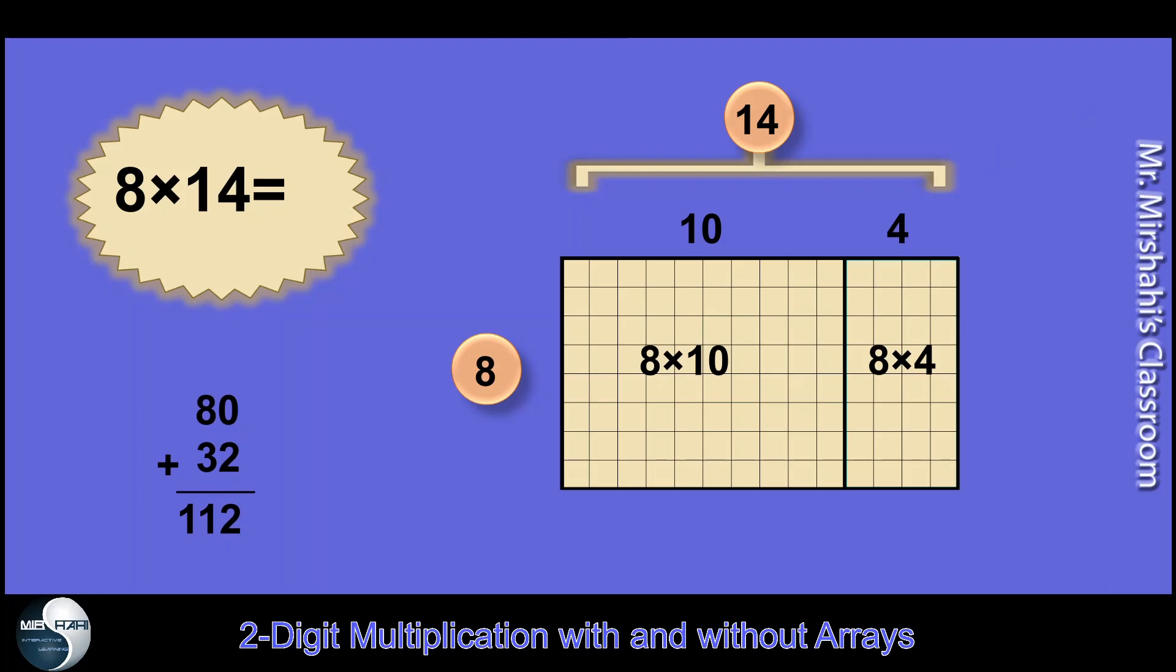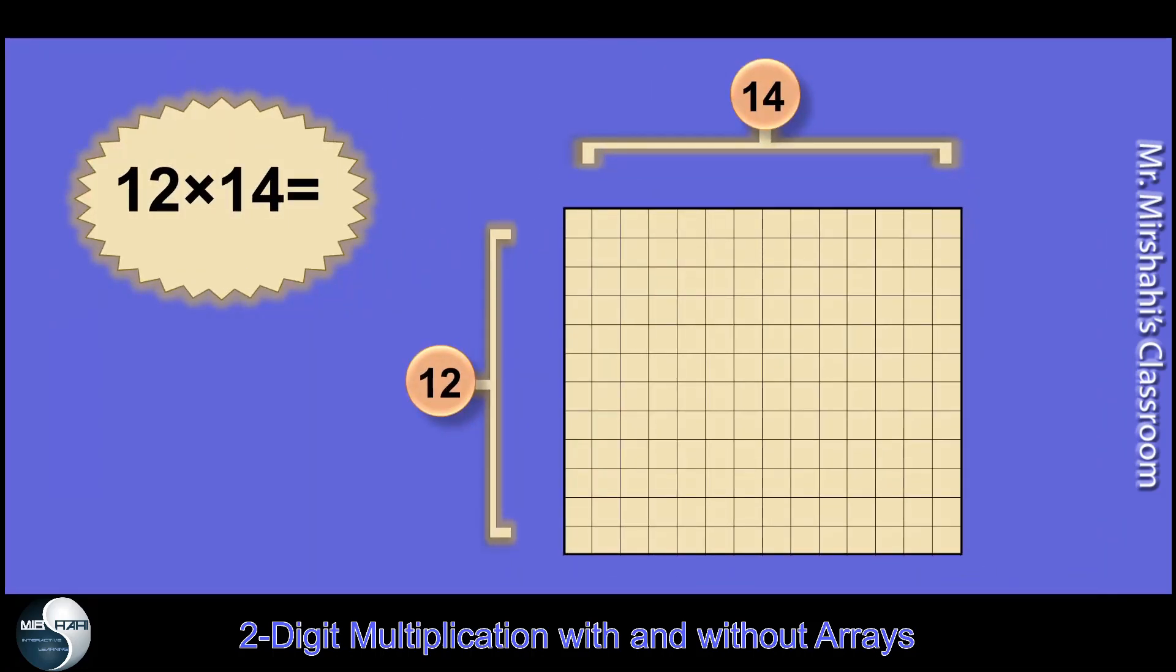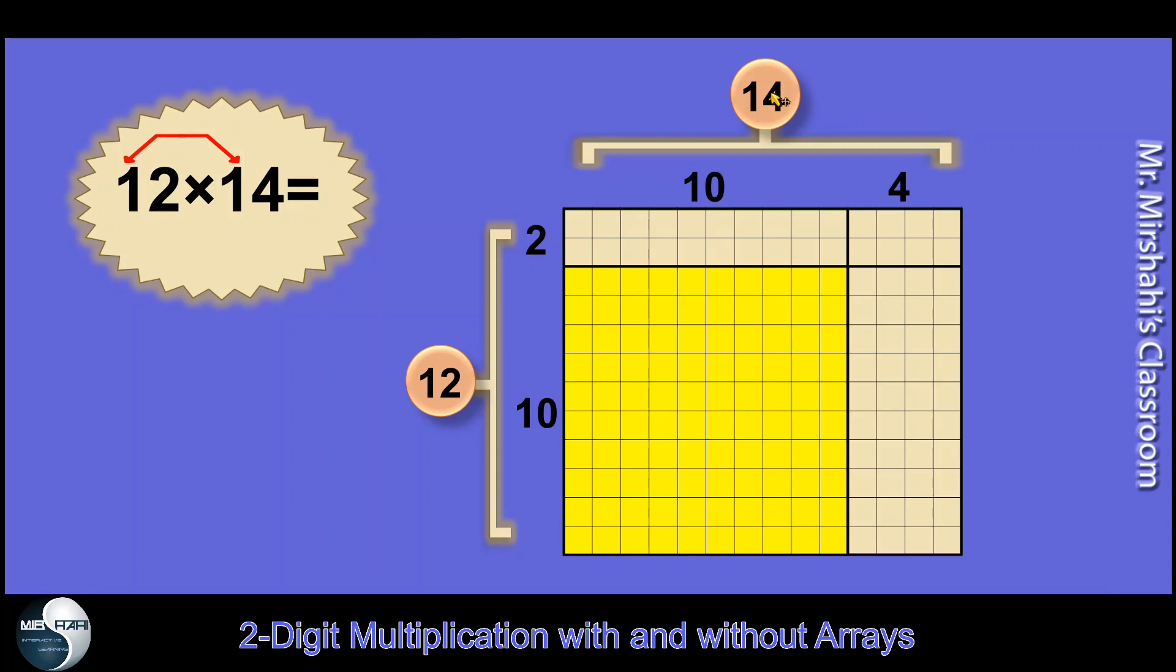Let's move on to our next example. A little bit more difficult. Both of them are two digit numbers, small two digit numbers. But I'll show you how it's done. We're going to split 14 into 10 and 4, and we're going to split 12 into 10 and 2.